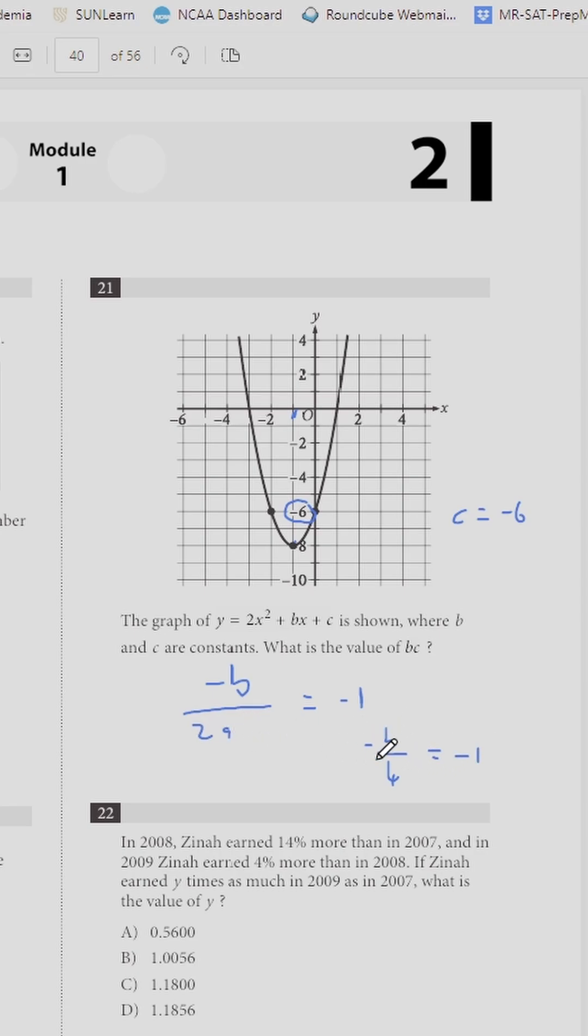So we multiply -1 by 4, and the negative comes out. So b equals 4.